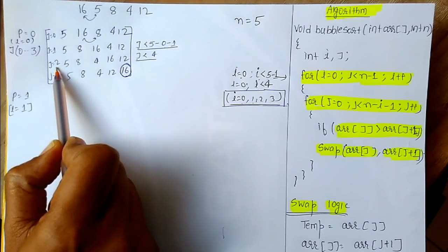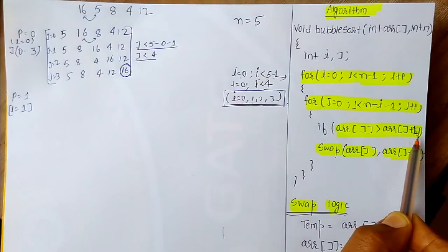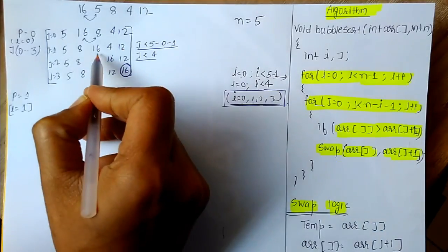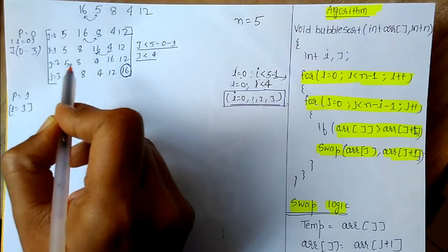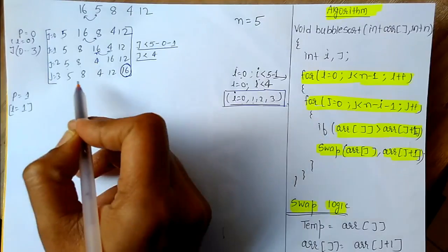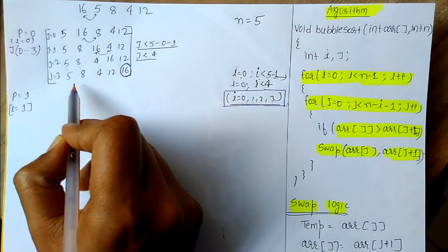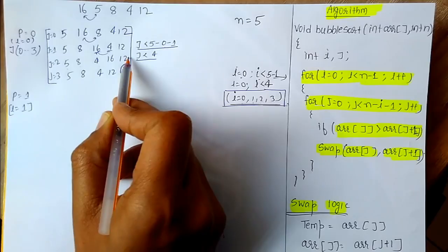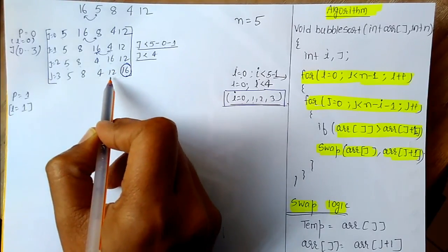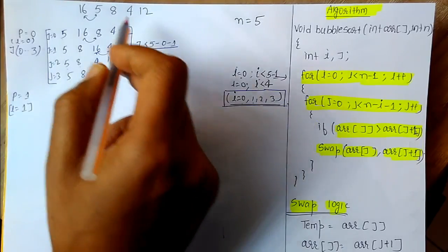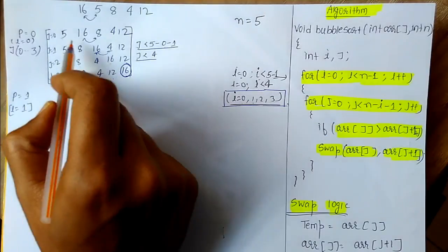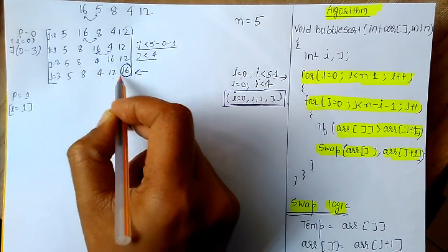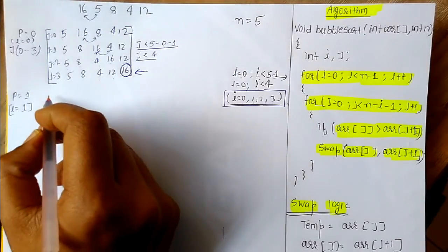Again j becomes 2. We check: is array[2] greater than array[3]? Array[2] is 16 and array[3] is 4. Yes, so we swap. It becomes: 5, 8, 4, 16, 12. For j equal to 3, we check: is array[3] greater than array[4]? Array[3] is 16 and array[4] is 12. Yes, 16 is greater than 12, so we swap. It becomes: 5, 8, 4, 12, 16. In this way, in one pass the maximum element 16 reaches the end and is now fixed.